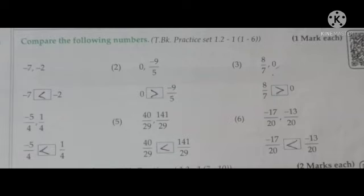(5) 40/29 and 141/29. So 40/29 is less than 141/29. I hope you all understood the above sums. Thank you.